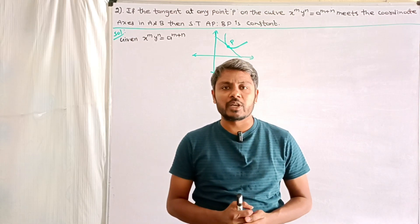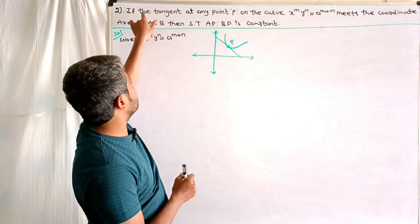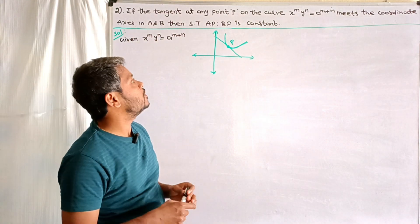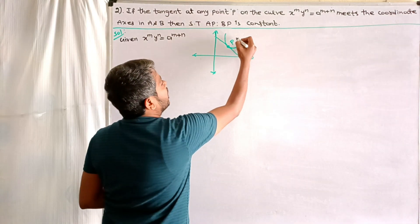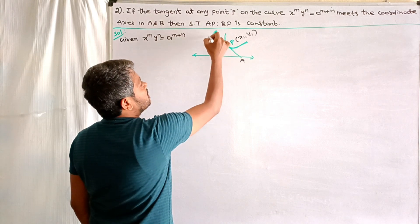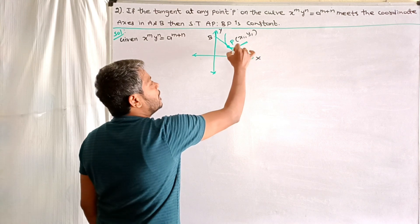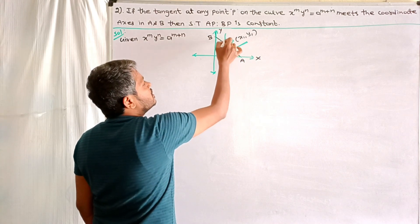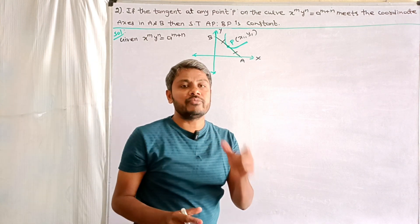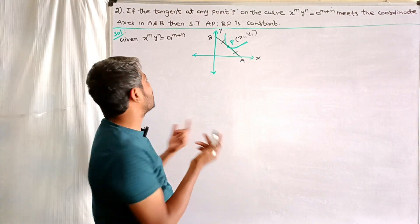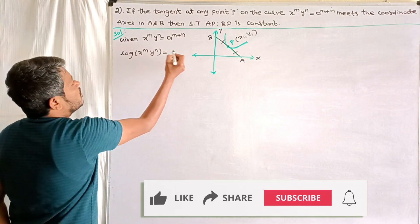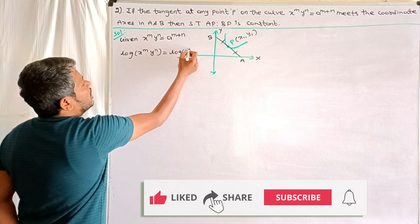Question number 2 is similar to the previous one. If the tangent at any point P on the curve x^m · y^n = a^(m+n) meets the coordinate axes at A and B, then show that AP:BP is constant. Let the point be (x₁, y₁). Apply log on both sides: log(x^m · y^n) = log(a^(m+n)).